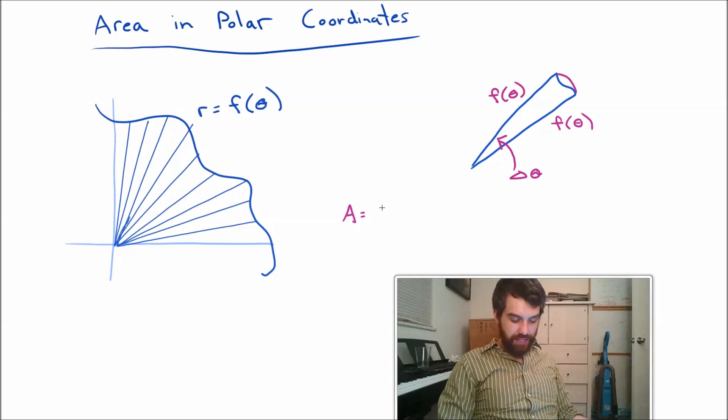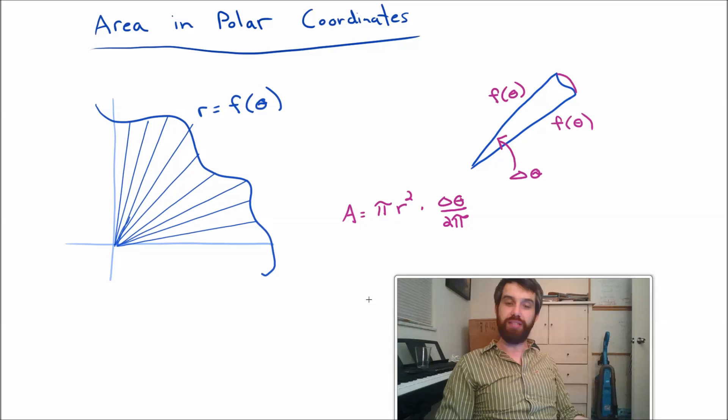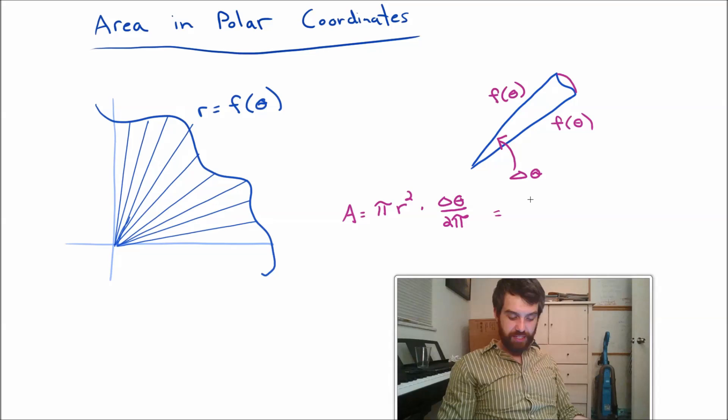Now, what I want to say... I want to claim that the area of this entire thing... Well, it's the area of a whole circle, which is going to be pi r squared, multiplied by... this is not the entire pizza, it's just a little portion of it. It's just delta theta divided by 2 pi. 2 pi is the entire thing, and we've only got delta theta of it. So this is going to tell me the area of my pizza slice.